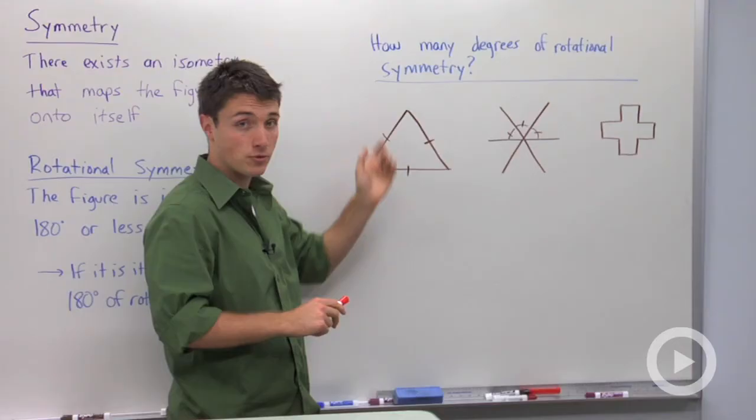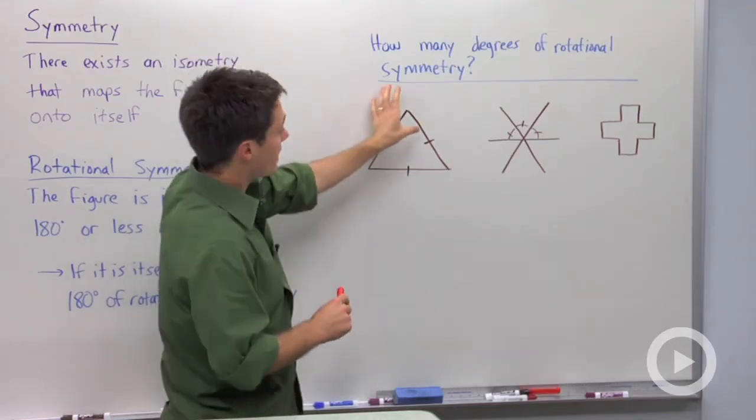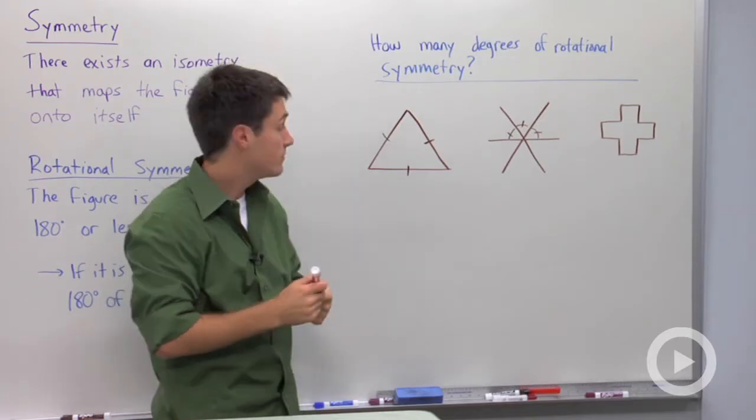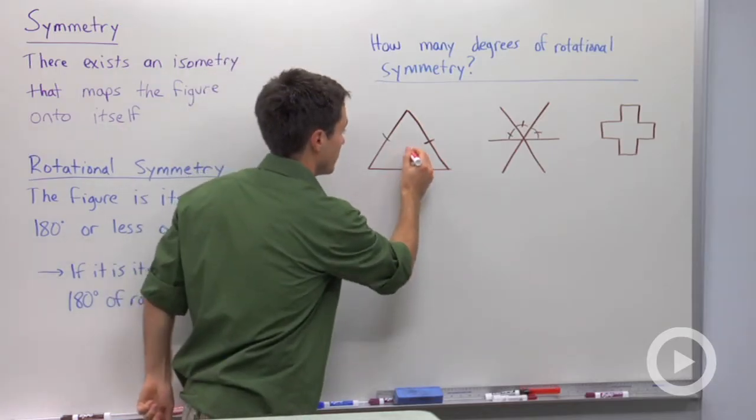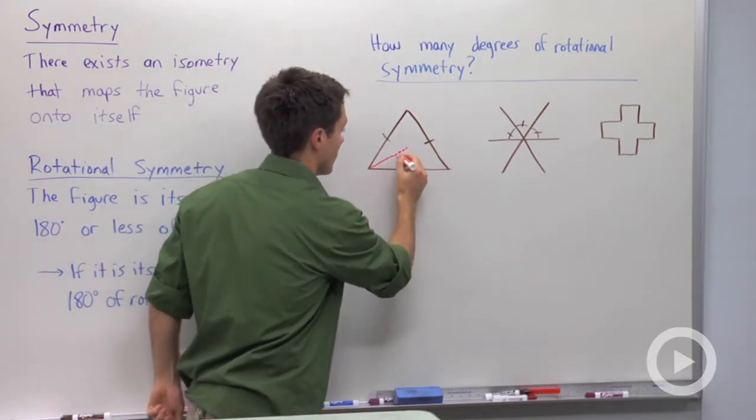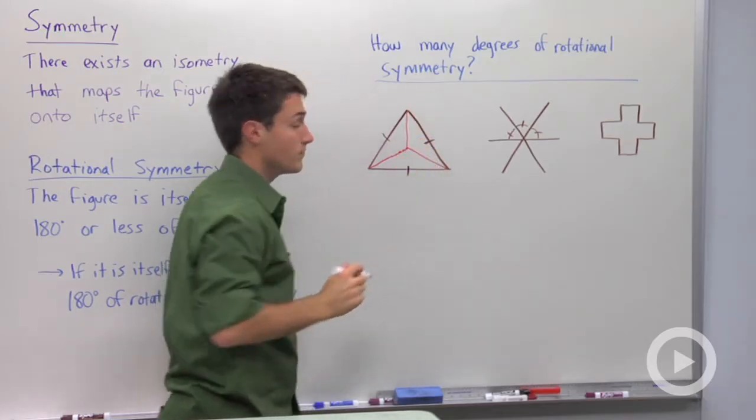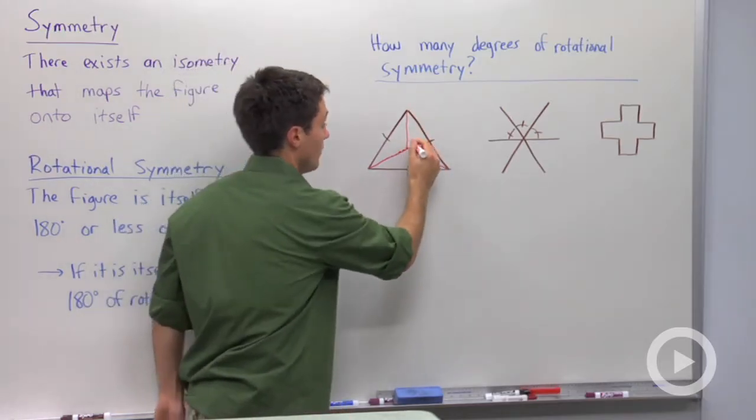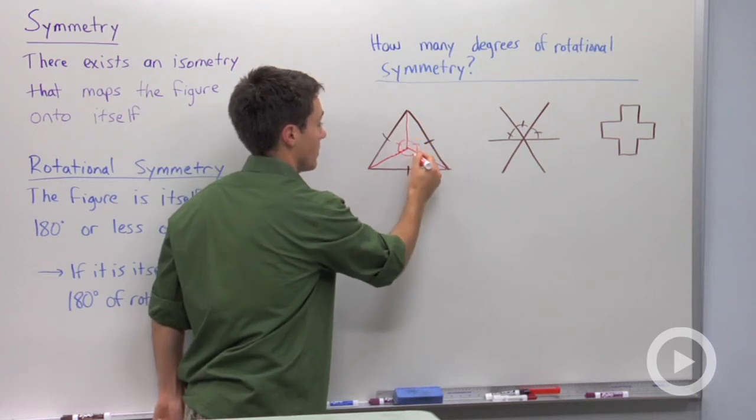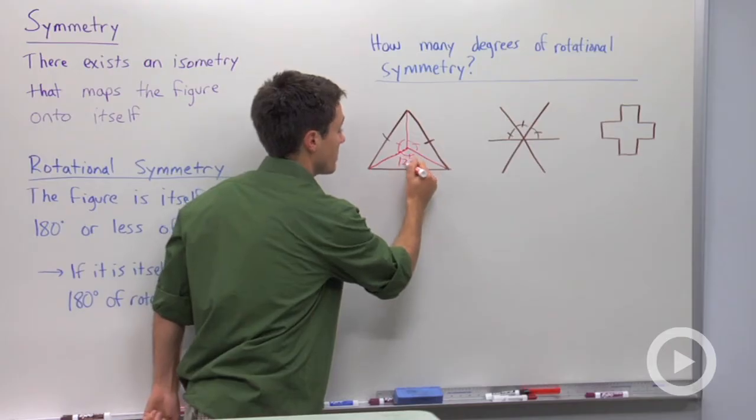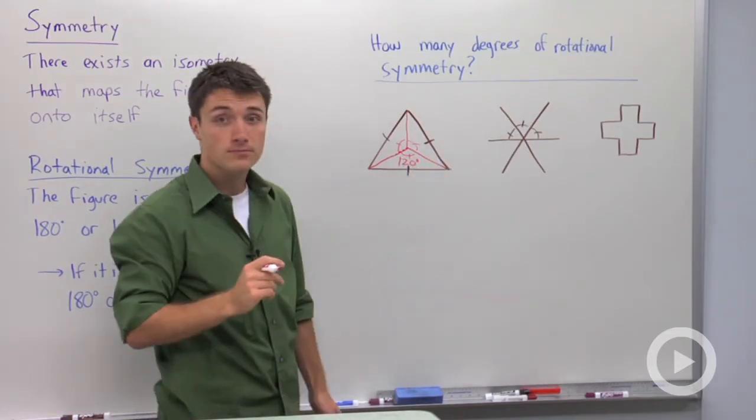Here we have an equilateral triangle. In my head, if I rotate this, I can definitely map it back onto itself. So if I draw in some lines here that will intersect right there, I see that if all three of these are congruent, which they are since it is an equilateral triangle, then they all must be 120 degrees.